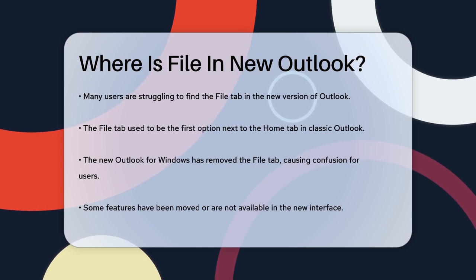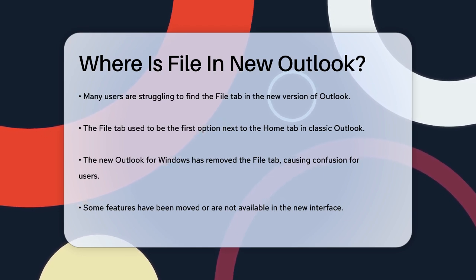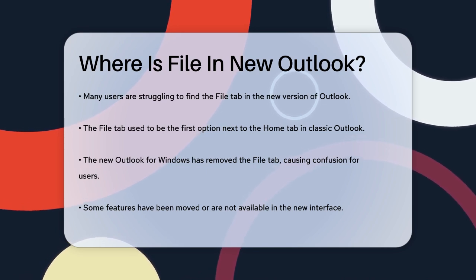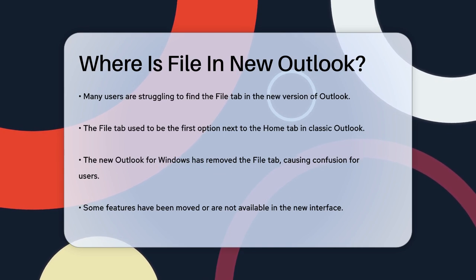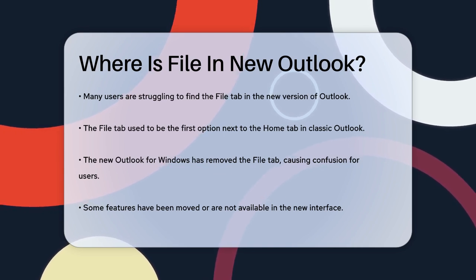In the classic Outlook, the File tab is usually the first option in the ribbon, right next to the Home tab. However, in the New Outlook for Windows, this tab is missing. This change can be confusing, especially if you're used to navigating through the File menu for various settings and options.